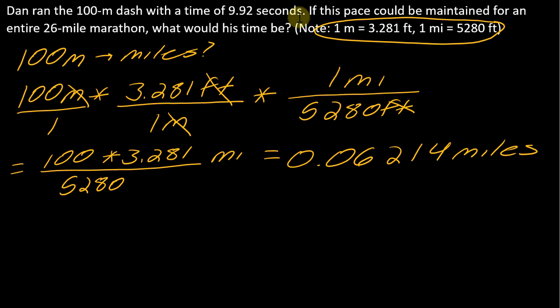Now I know the 100 meters is 0.06214 miles. So he ran 0.06214 miles in 9.92 seconds. Now he wants to maintain this pace over all 26 miles. How would you finish this problem? You know he's run this amount of distance in this amount of time. How can you extrapolate that into how long it would take to run a 26 mile marathon?